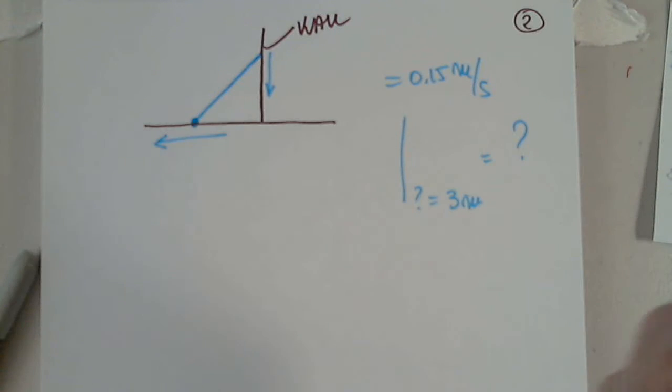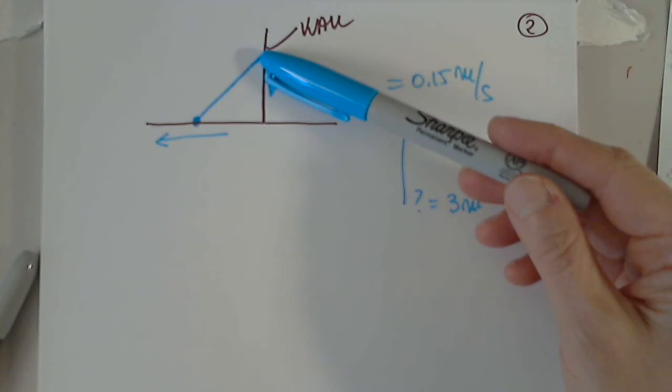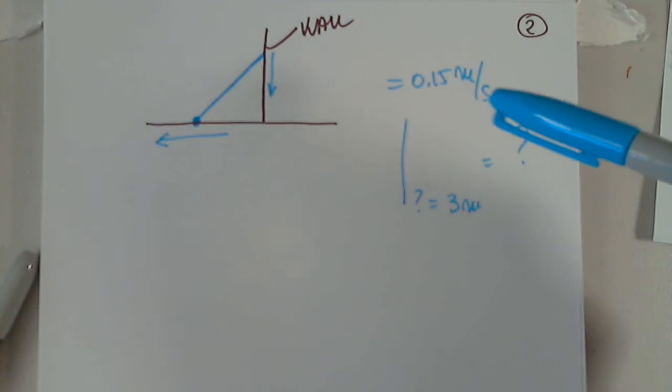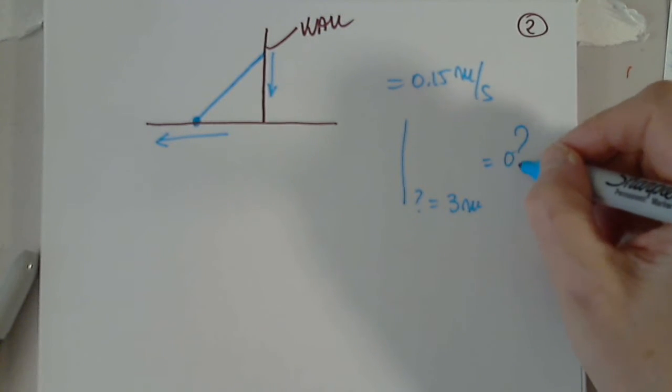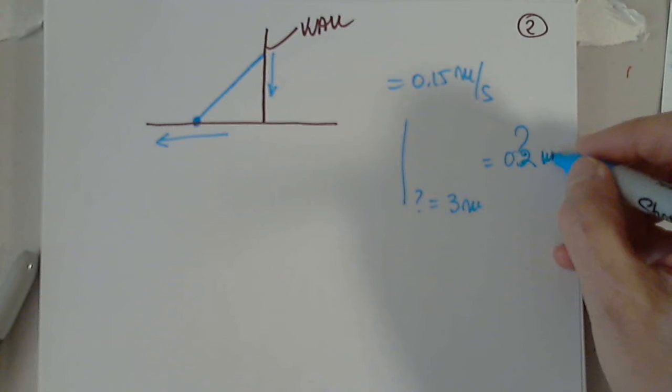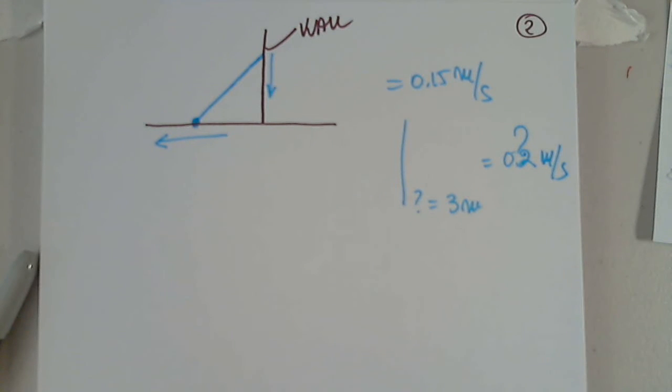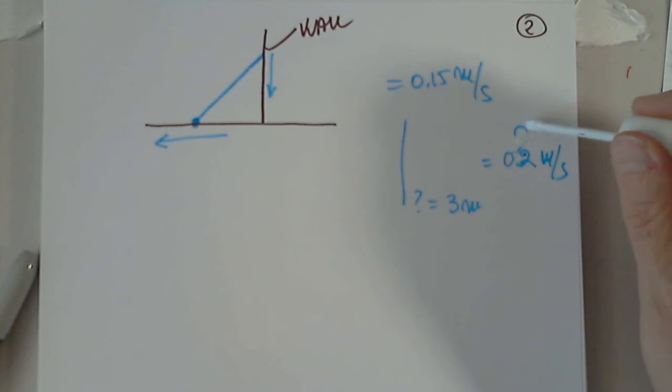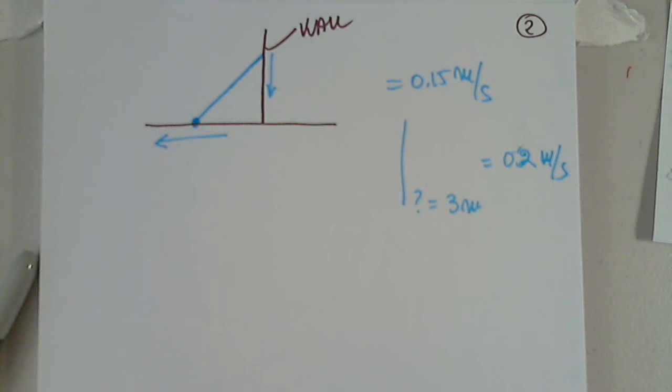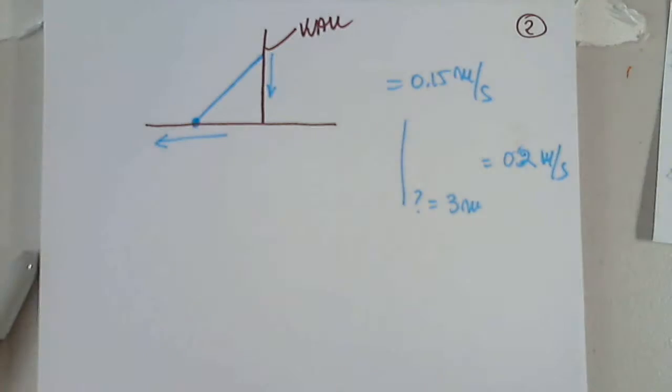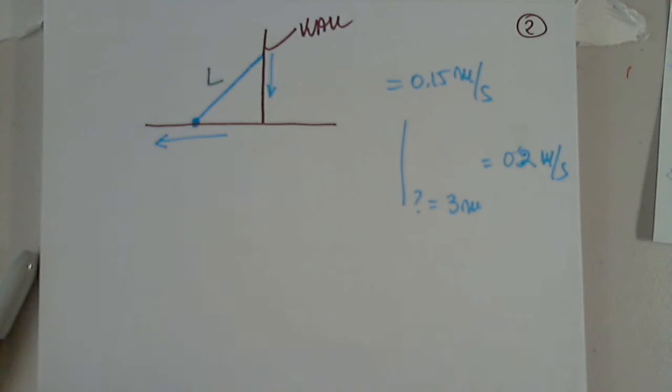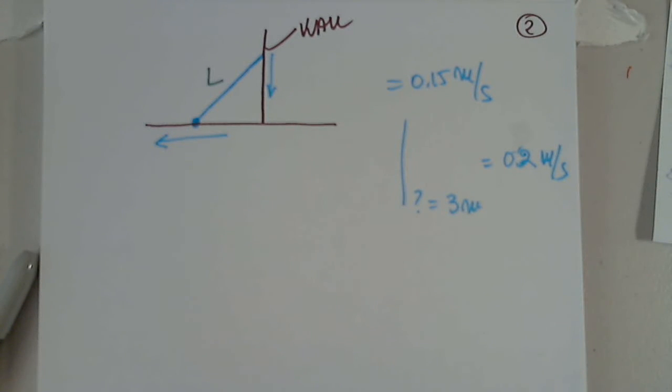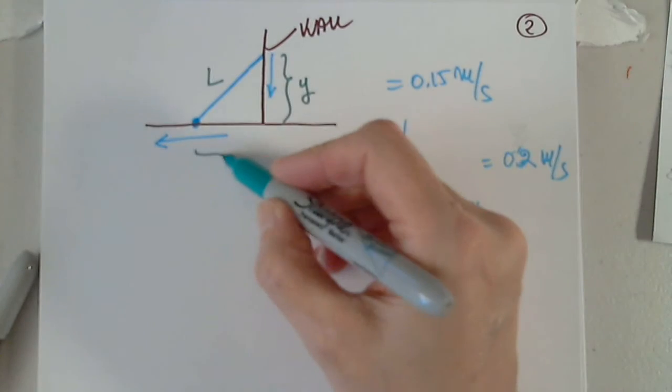So one more time. So I lost my train of thought. No problem. So the top of the ladder slides down a vertical wall at a rate of 0.15 meters per second. At the moment when the bottom of the ladder is 3 meters from the wall, it slides away from the wall at a rate of 0.2 meters per second. Question: How long is the ladder? I'm going to denote this by length L, this by y, and this by x.